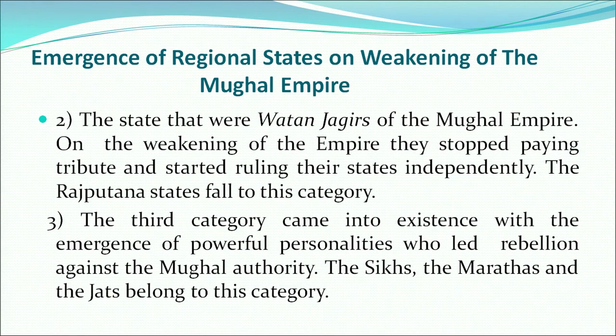The Rajputana states fall into this category — Udaipur, Jaipur, and Jodhpur were all Watan Jagirs of the Mughal Empire and became independent after its weakening. The third category arose with the emergence of powerful personalities who led rebellions against Mughal authority. The Sikhs, the Marathas, and the Jats belong to this category.